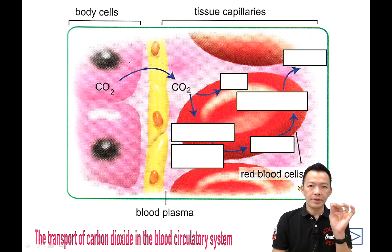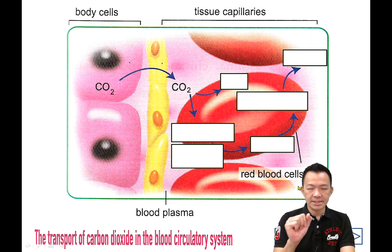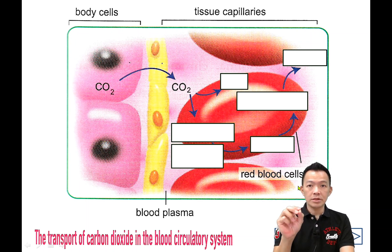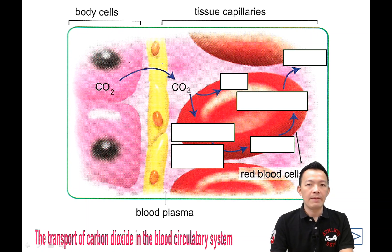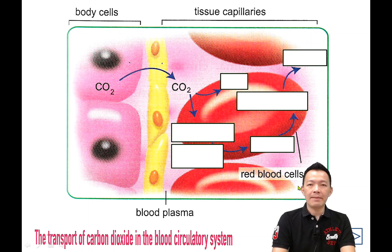So to recall: 7% of carbon dioxide will be transported in the form called carbonic acid. 23% joins with the hemoglobin to become carbaminohemoglobin. And another 70% will be in the form of bicarbonate ions.